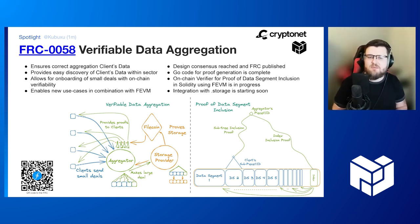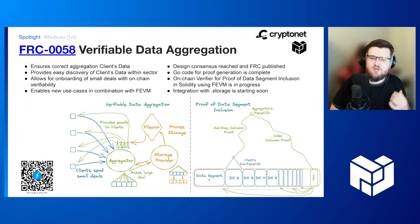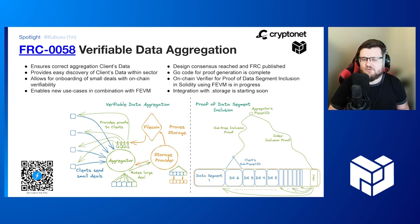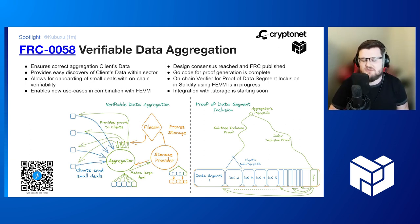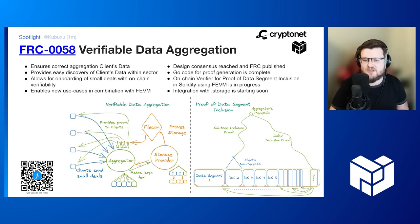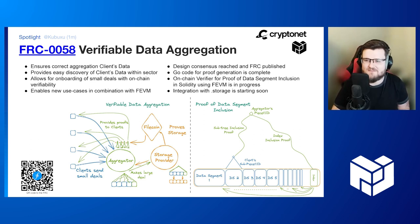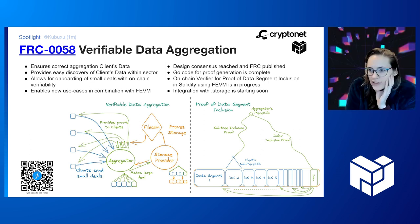The standard defines how to aggregate data and how to build an index stored inside the sector — covering all data aggregated within the larger deals — so that retrieval is still possible and easy. We've reached design consensus, the FRC was published, the Go code for proof generation is complete, and we're currently working on a Solidity verifier so that contracts can verify those aggregated deals on chain. We'll be starting integration with Dot Storage and most likely Estuary as well.